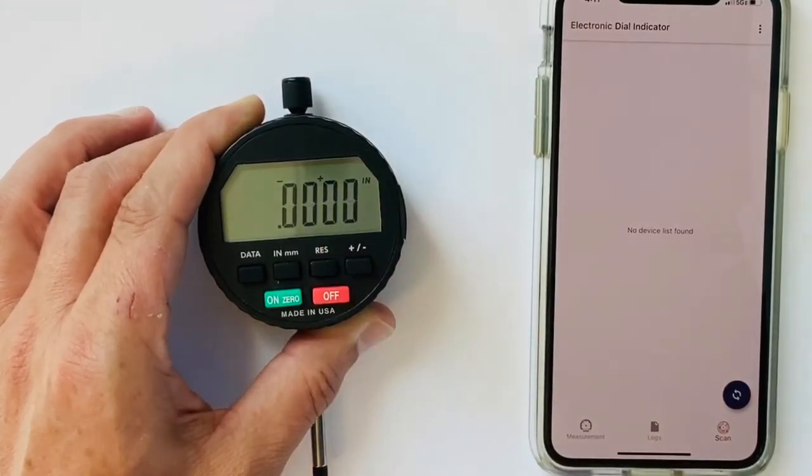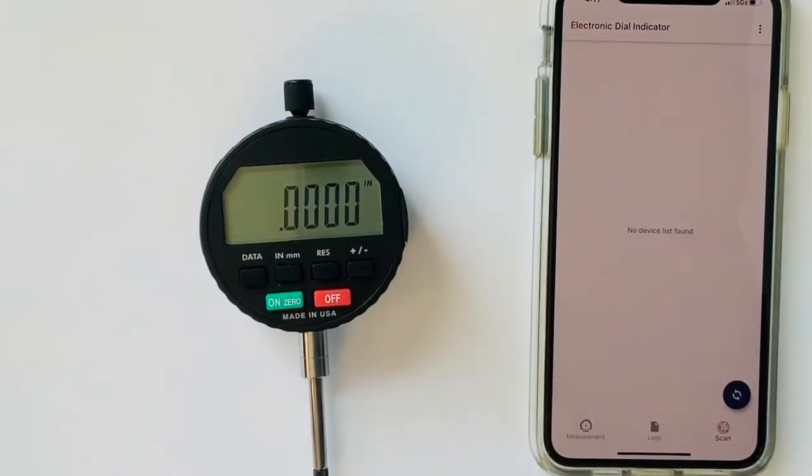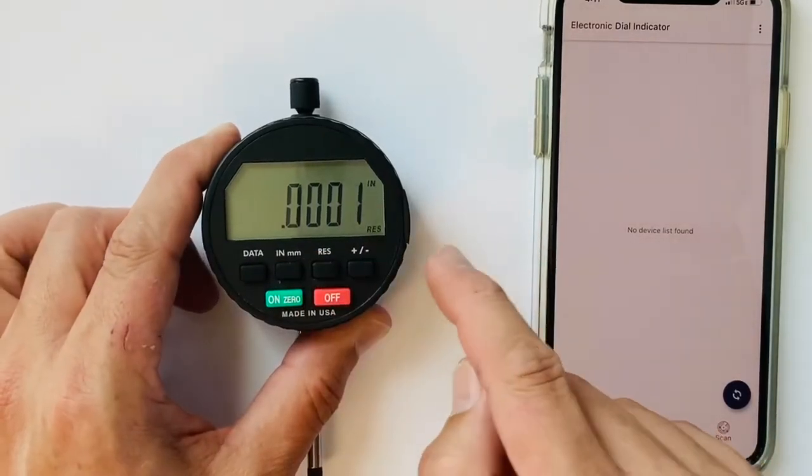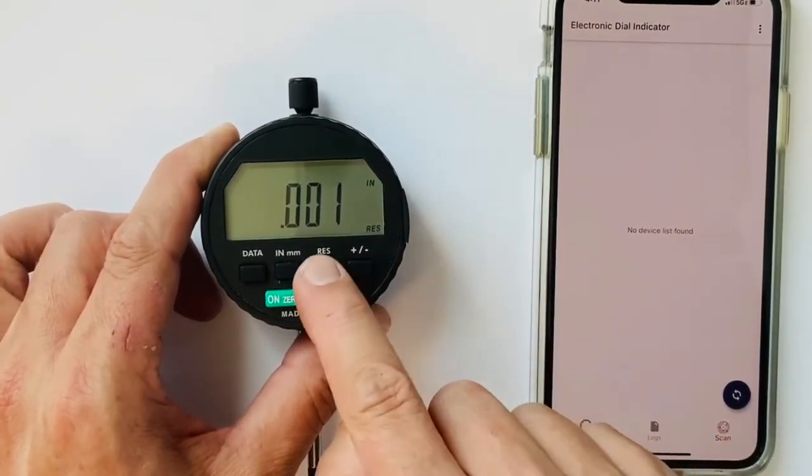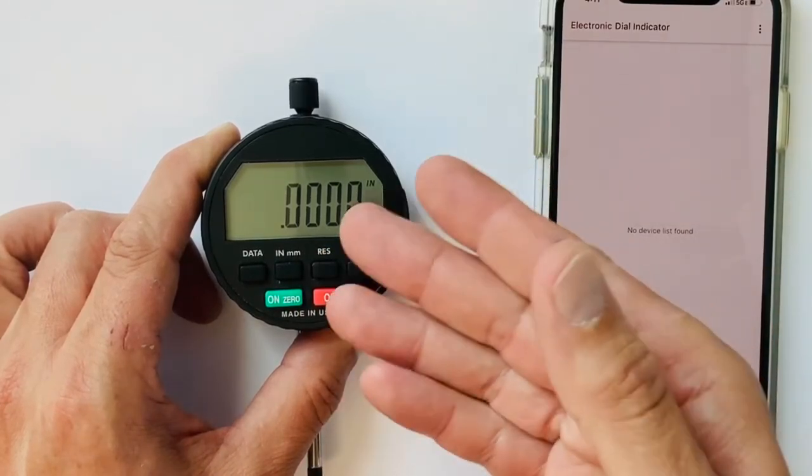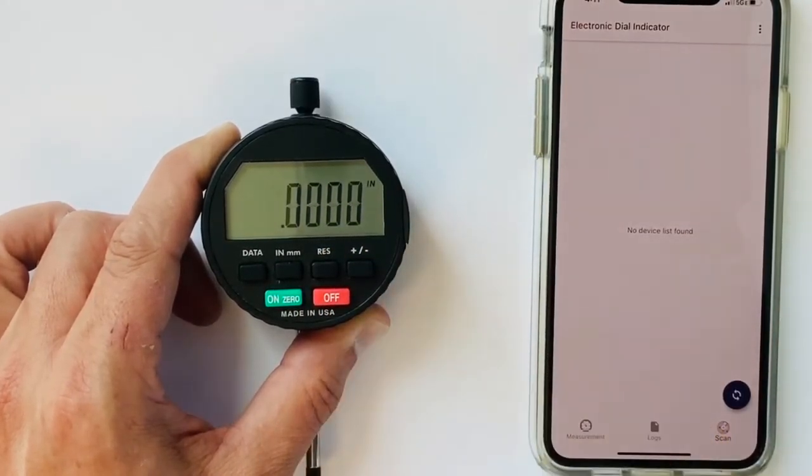We have a res button that stands for resolution. You could always change the indicator to a coarser resolution and not a finer than purchased. You would toggle press it and toggle through the resolutions. And if I stop it'll time out and set the resolution where I left it.